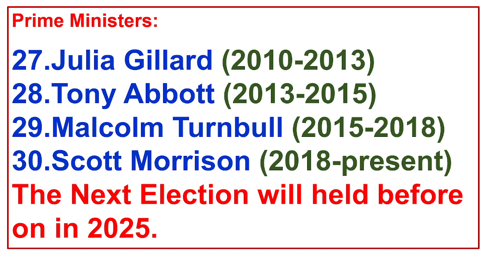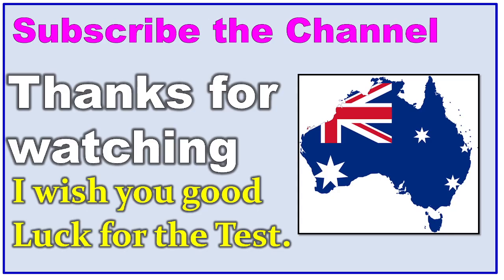30. Scott Morrison from 2018 to present. The next election will be held in 2025. Wishing you good luck with your Australian citizenship.